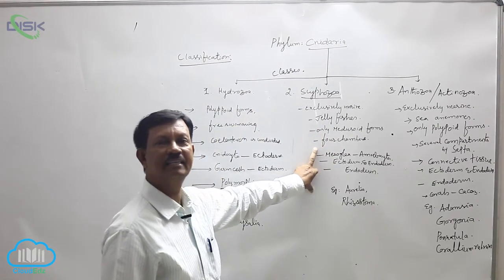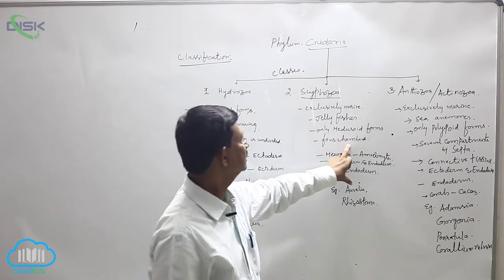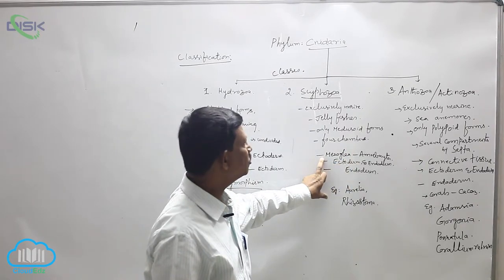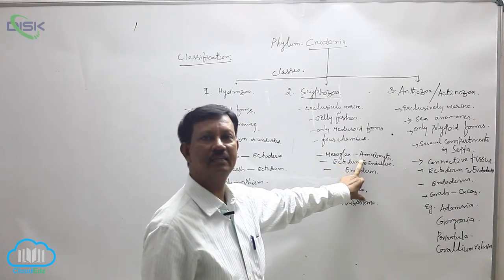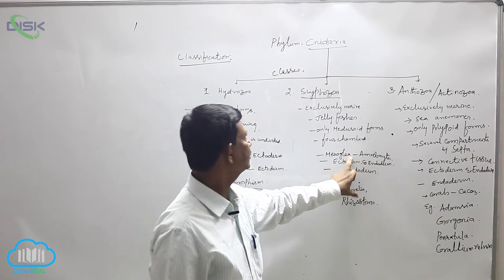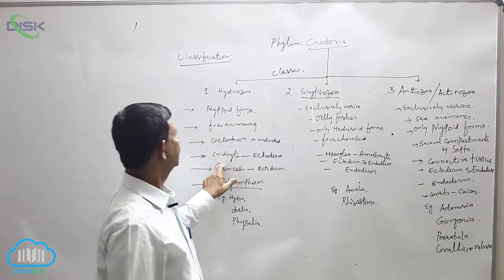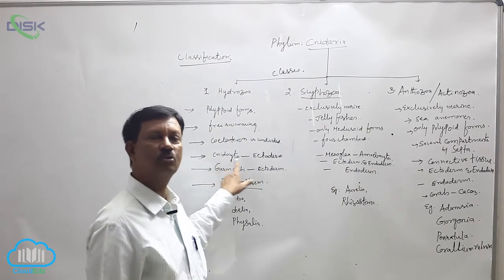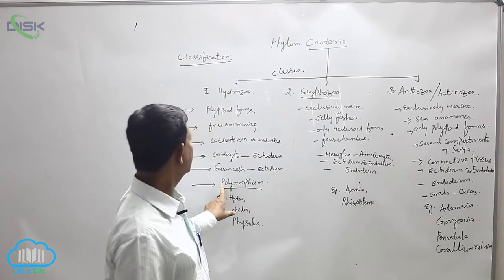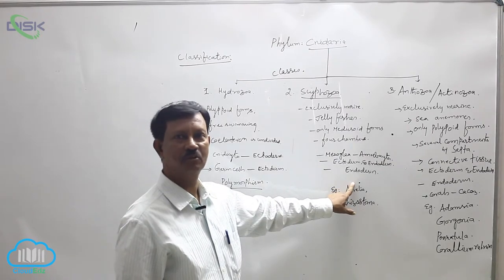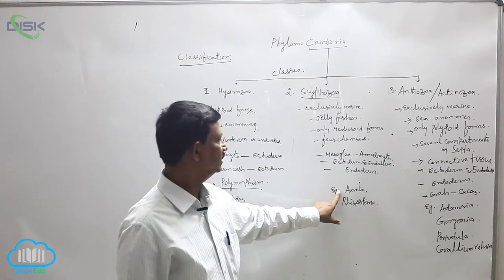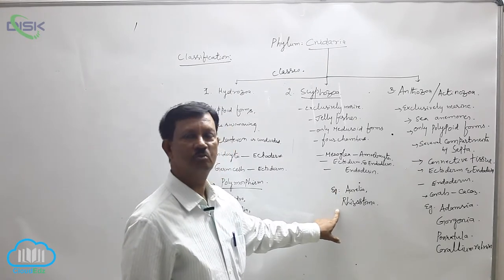The coelenteron, the inner cavity, is divided into four chambers, and some canals are also present. Mesoglia contains amoebocyte cells — irregular-shaped cells are present in the mesoglia. Cnidocytes are not only present in the ectoderm, they are also present in the endoderm. Germ cells or reproductive cells are produced from the endoderm. Examples are Aurelia, commonly known as jellyfish, and Rhizostoma.